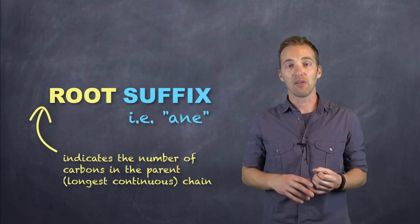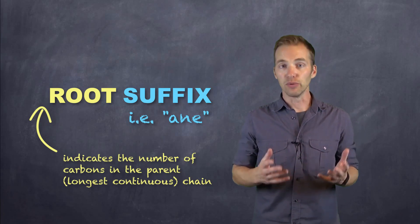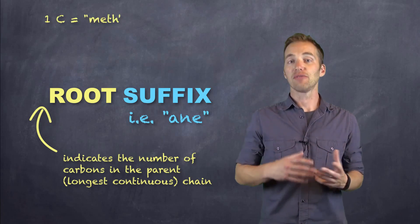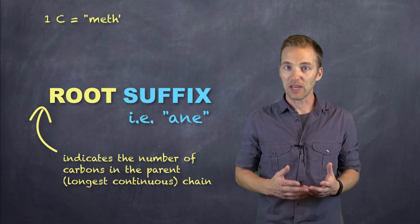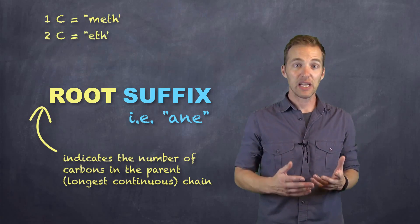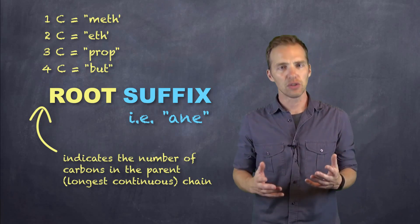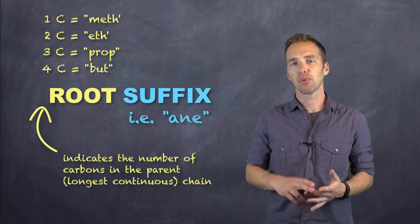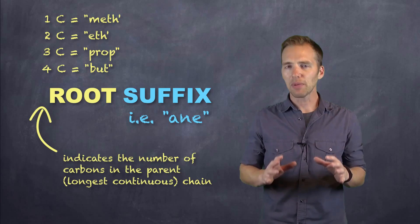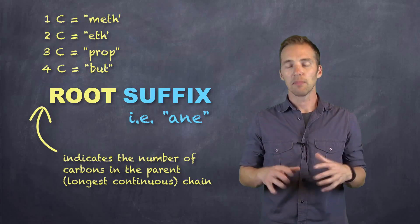If we have one carbon, we have the root meth. If we have two carbons bonded together, we have eth. If we have three, it's prop. And if we have four, it's bute. Those four are going to be relatively new to you: meth, eth, prop, and bute. But you've probably heard those roots before.